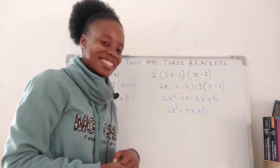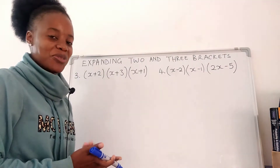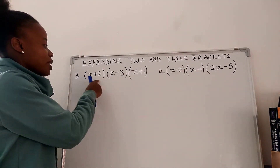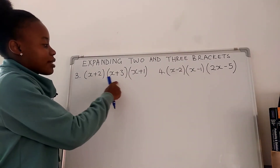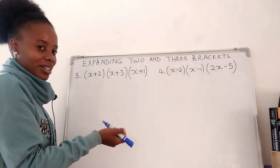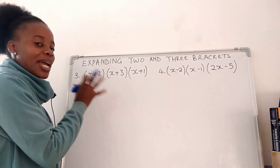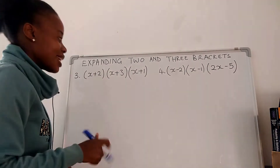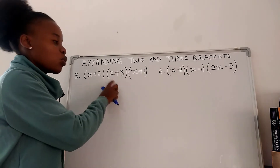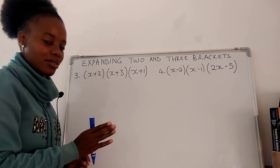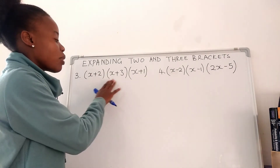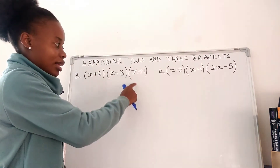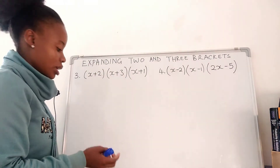Now let's remove three brackets. Number three: we have (x + 2)(x + 3)(x − 1). We're supposed to expand this. The first thing — just deal with the first two brackets. After we are done with them, deal with that result and the remaining bracket.